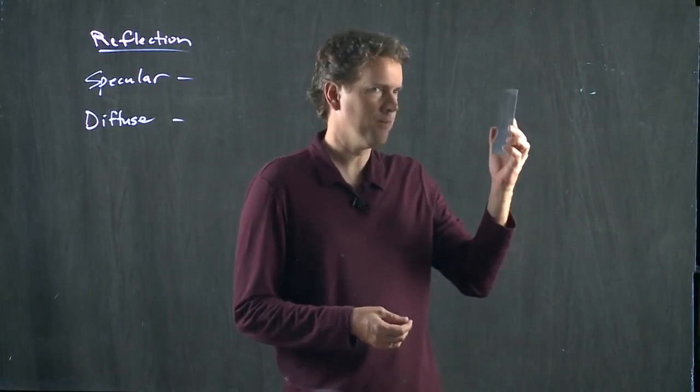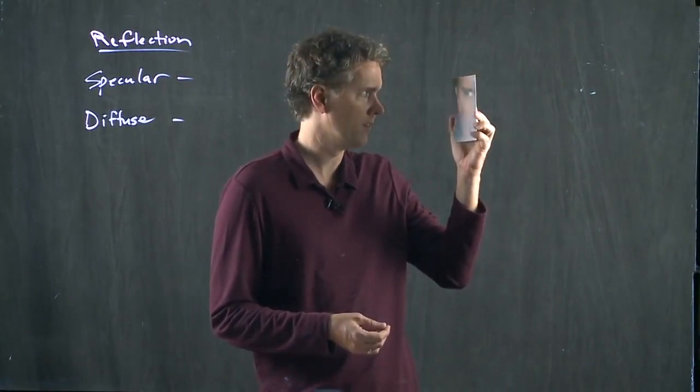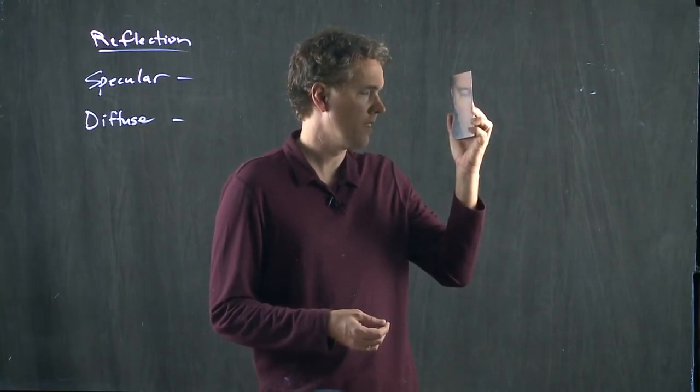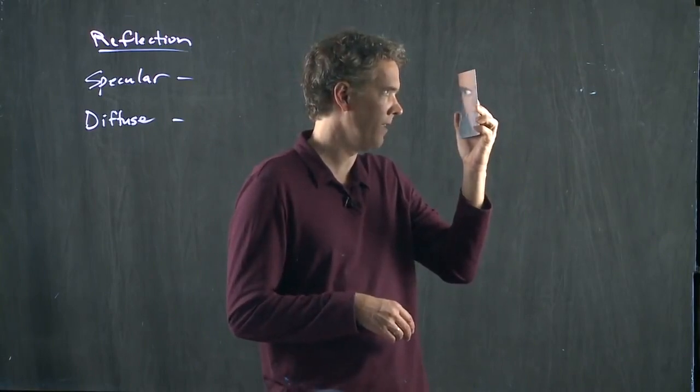If I look in this mirror, can you guys see me in that mirror? There's my eyeball. You can see my eyeball right there. That is what's called a specular reflection. You can make out my face in that image from the mirror.